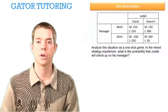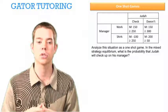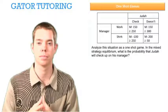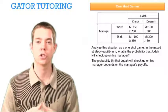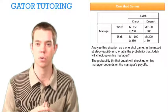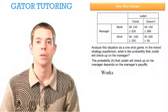So this question says, analyze this situation as a one-shot game. In the mixed strategy Nash equilibrium, what is the probability that Judah will check up on his manager? So the probability H that Judah will check up on his manager, this is going to depend on the manager's payoffs. We're going to look at how the manager will act to see the probability that Judah will check up on him.